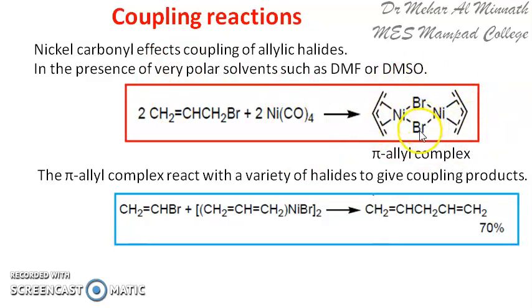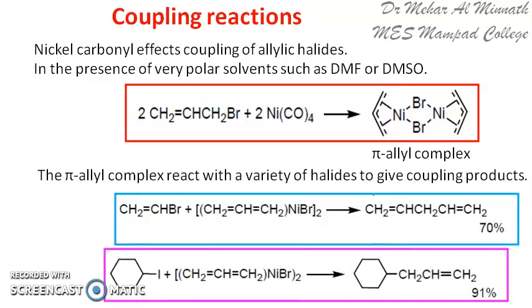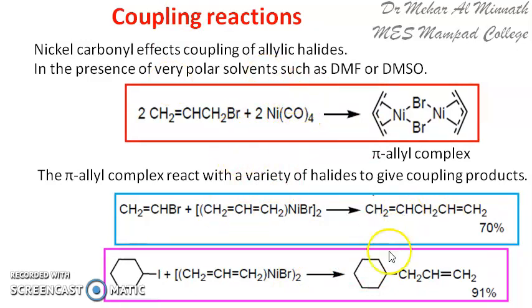The intermediate compound formed during the reaction is the pi-allyl complex. In the case of coupling reactions we are using nickel tetracarbonyl. In another reaction, you have the pi-allyl complex and a cycloserine-derived iodide, and they react together. So this is the reaction of allyl halides with nickel tetracarbonyl to form coupled products.